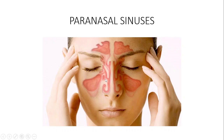Histologically, each sinus is lined by ciliated pseudostratified epithelium with mucus-secreting goblet cells. This lining helps with drainage of the sinuses — every sinus continuously produces mucus which is drained and ends up within the nasal cavity.